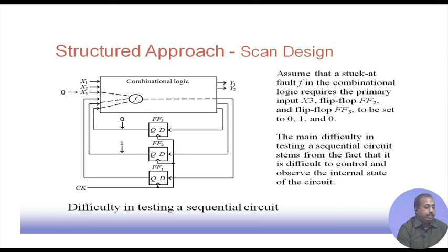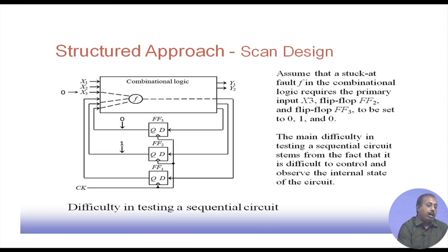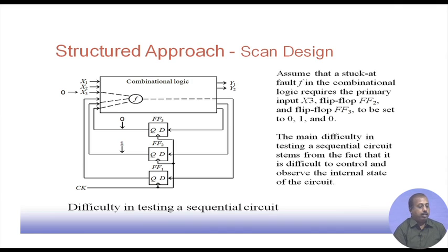Since X3 is a primary input, you can easily set it to 0. But the problem comes in setting FF2 and FF3 to 1 and 0. When you reset this whole finite state machine, the flip-flops are in some state depending upon the start state of the system, and then transitions occur in these flip-flops as defined by the finite state machine specification. So whether you can get a particular state very easily or not depends on the FSM. In the case of a scan circuit, it will be converted into a pure combinational one.